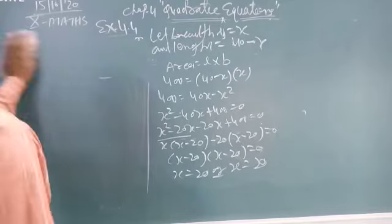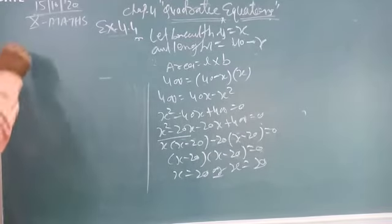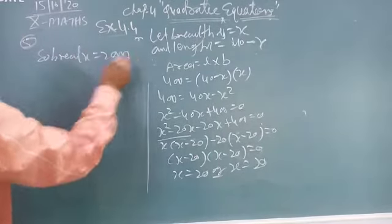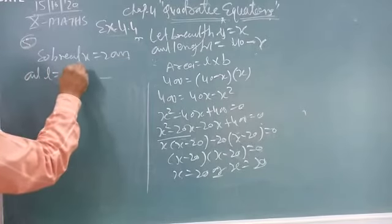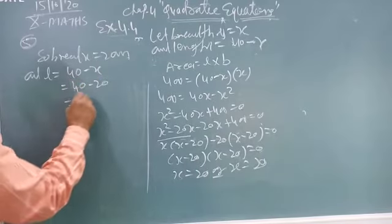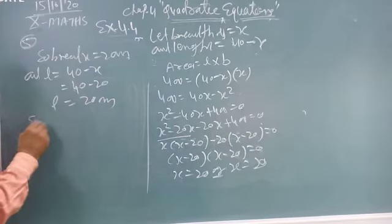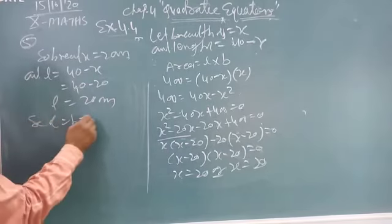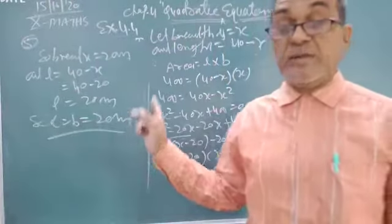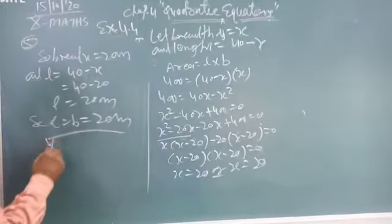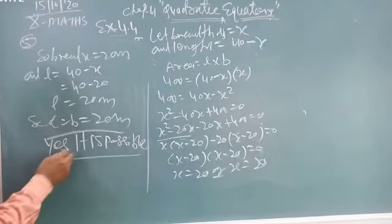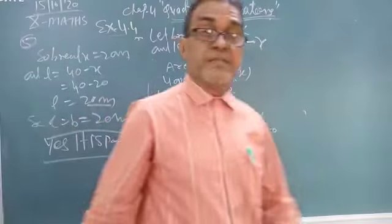Area of this rectangle is given. So breadth x equals 20 meters and length 40 minus x means 40 minus 20 is also 20 meters. So L equals B equals 20 meters. So length and breadth are equal. So it is also possible. You write yes. Yes, it is possible to design a rectangle with 20-20 meters of length and breadth.